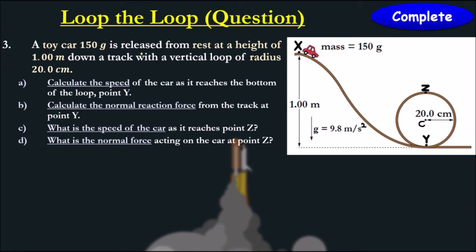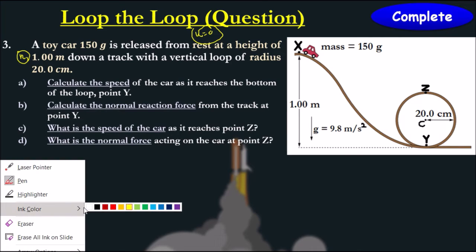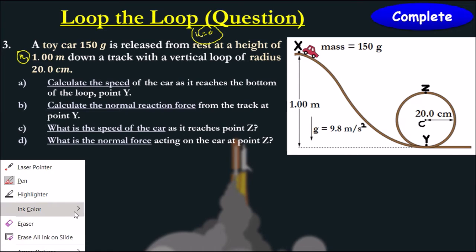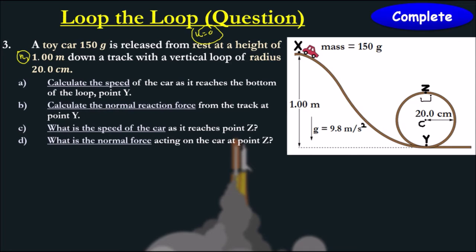We have a toy car of 150 grams, released from rest, so we know from that the initial velocity is 0. From a height of 1 meter, with a vertical loop of radius 20 centimeters here. It says calculate the speed of the car as it reaches at the bottom of the loop at y.